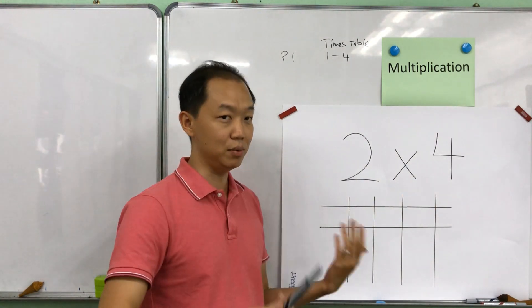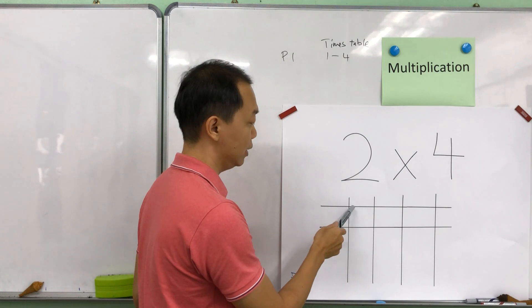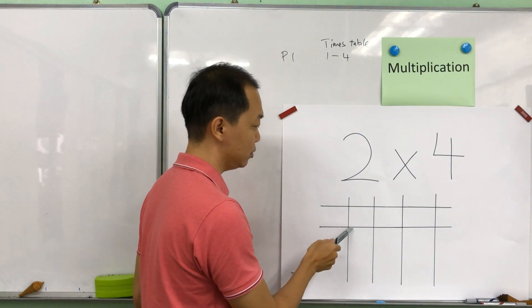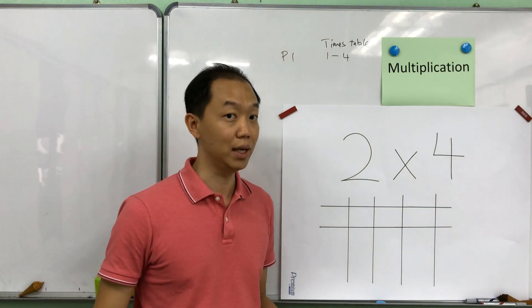So for example 2 times 4, we know that it's 8 but for the primary one students what they do is they calculate. They count: this is 1, 2, 3, 4, 5, 6, 7, 8. So the answer will be 8.